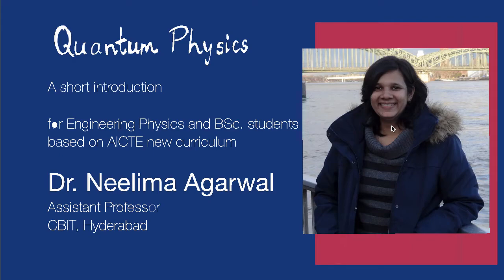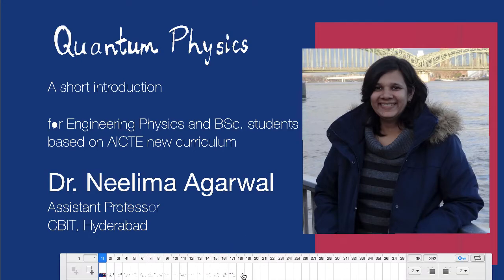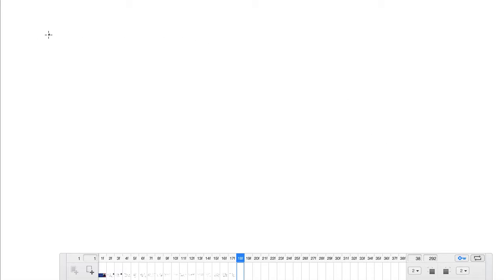Hello students. In the last lecture I told you all about the great statement of the de Broglie hypothesis, which was not a very simple statement to make: that a particle of momentum p has an associated wavelength lambda equal to h upon p. This de Broglie hypothesis implies the famous Heisenberg uncertainty principle.